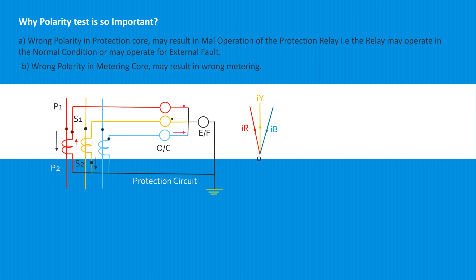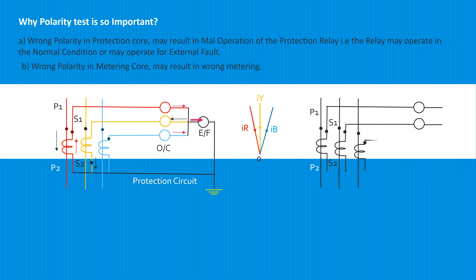No current flows through the earth fault relay. But when any of the CT currents is reversed due to a change in polarity, this balance is broken and current flows through the relay, causing the relay to operate in normal condition. If CT polarity is reversed, the metering would show energy flowing in the wrong direction.